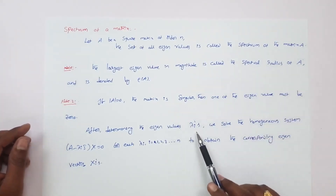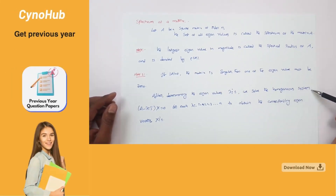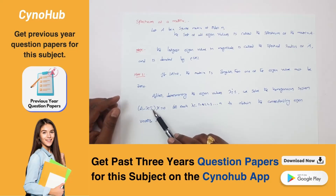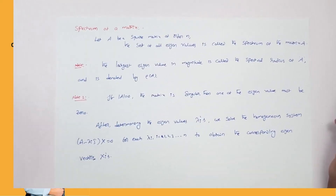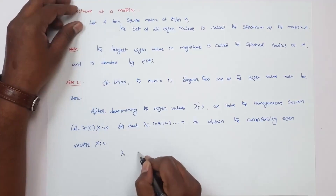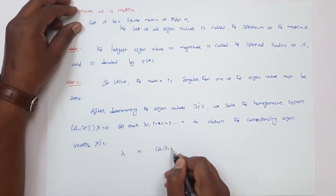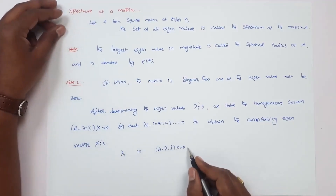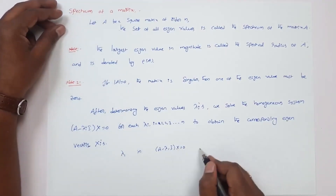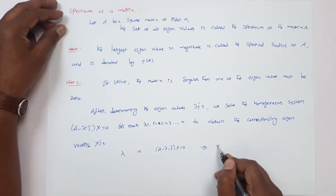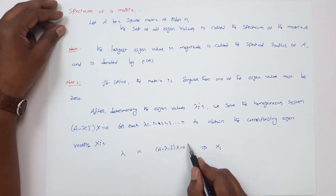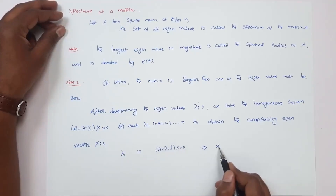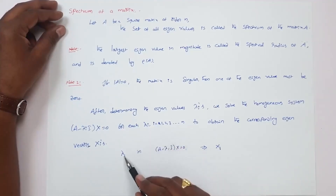After determining the eigenvalues lambda_i, we solve the homogeneous system (A minus lambda_i I) times X equals zero for each lambda to obtain the corresponding eigenvectors. That is, substitute lambda_1 in (A minus lambda I) times X equals zero. We get a homogeneous system of linear equations. Solving this system, we get a non-trivial solution X_1, which is called the eigenvector of A corresponding to the eigenvalue lambda_1.